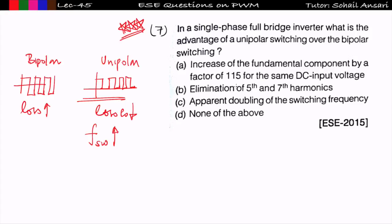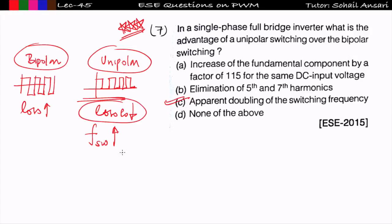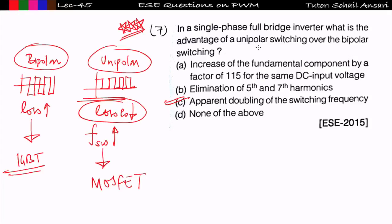Looking at the options: option A — increase of fundamental component by factor 100–115 — is not correct as the Fourier series of pole-to-pole voltage remains the same. Option B — elimination of fifth and seventh harmonics — applies to both. Option C — apparent doubling of the switching frequency — is correct, because lower losses allow higher switching frequency in unipolar. MOSFETs are used for unipolar (high switching frequency) and IGBTs for bipolar. Option C is correct. See lecture 43.